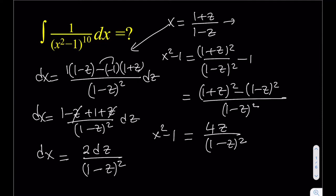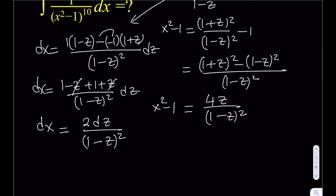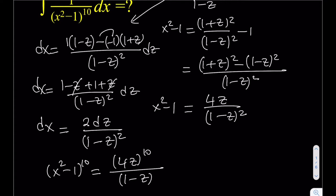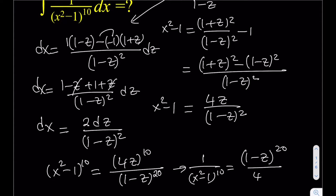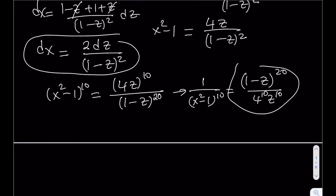The nice thing about this substitution is that both x² - 1 and dx share the same expression (1 - z)² in the denominator. Now substituting into the integral, we need 1/(x² - 1)^10. So (x² - 1)^10 = (4z)^10 / (1 - z)^20, and its reciprocal is (1 - z)^20 / (4^10 · z^10).